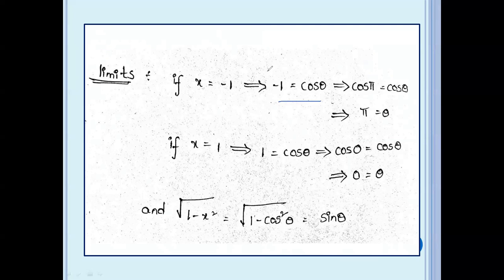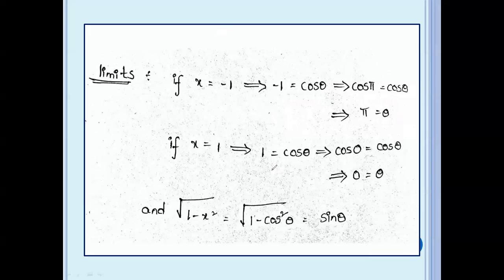When x equals cos θ: if x equal to minus 1, then cos θ equal to minus 1, which means cos π equal to cos θ, so θ equal to π. If x equal to 1, then cos θ equal to 1, and cos 0 equals cos θ, so θ equal to 0.